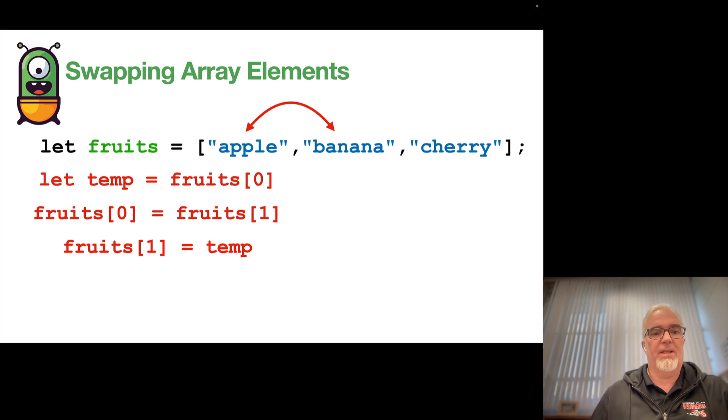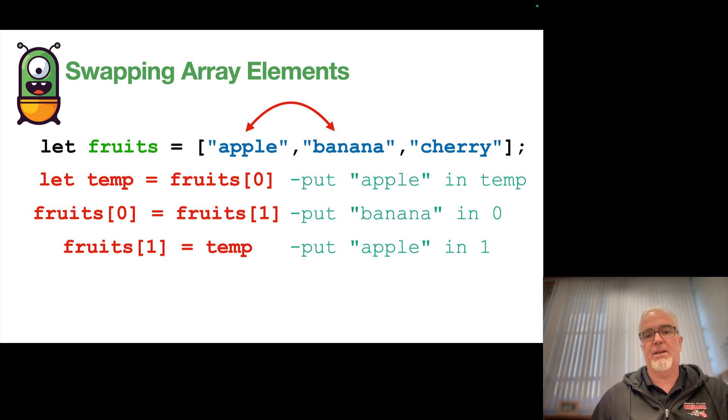The first line of code is let temp equals fruits[0]. So I'm putting the value into that spot and then I'm taking fruits[0] and I'm moving banana into the apple spot. And finally, I'm taking the temp variable and I'm putting it into that spot.